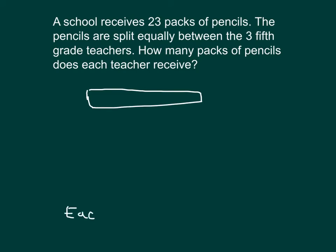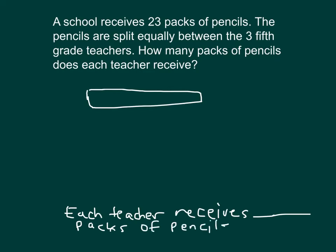Each teacher receives blank packs of pencils. What we're dividing here is the 23 packs of pencils. So our whole in our bar model is 23. And we're thinking about splitting this equally between the three fifth grade teachers. So we have three units that make up the whole. Three units that make up 23. One unit, then, is 23 divided by three.